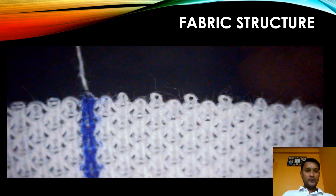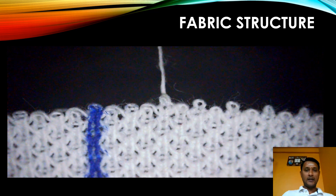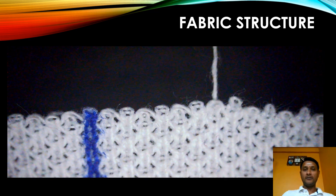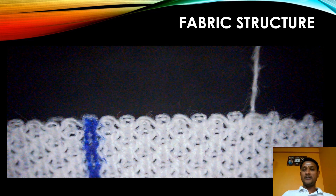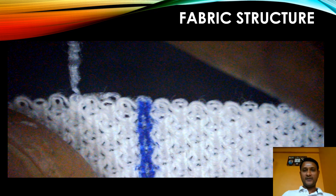In course number two, after that vertical line, the loop is getting completely unraveled from each and every needle, so it is nothing but the knit stitch. The knit stitch is present across all the needles, so it is very easy to notate — course number two is knit-knit-knit-knit-knit. Let's move on to course number three.